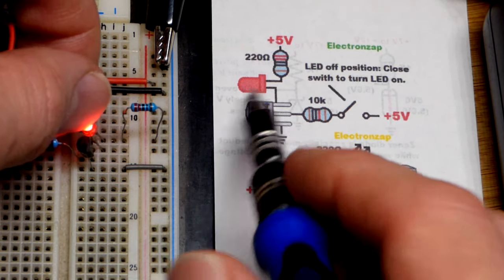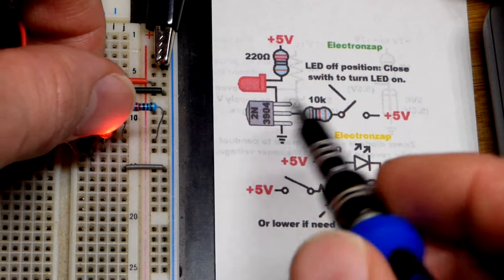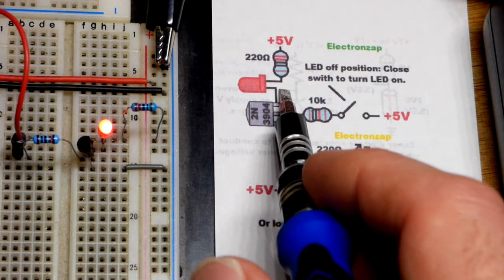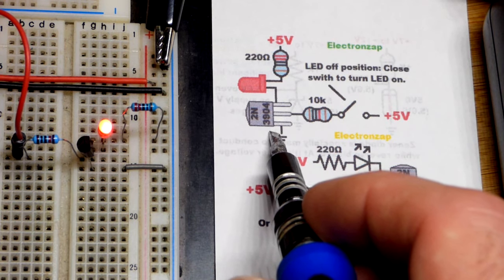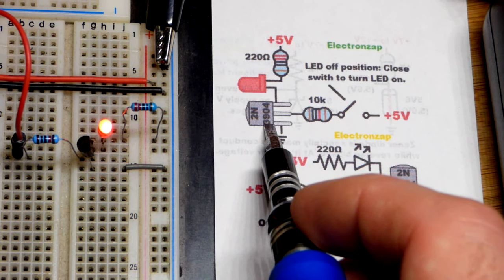You got to put the LED in the right way too. That's the shorter lead cathode, longer lead anode headed to the positive supply. We are limiting current through the circuit basically with the 220 ohm resistor right there. The transistor is either on or off.